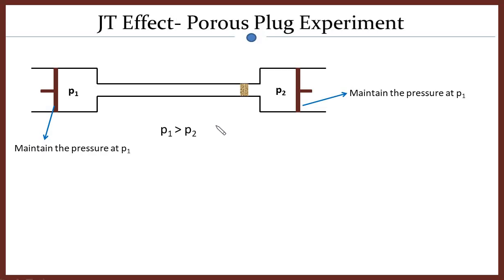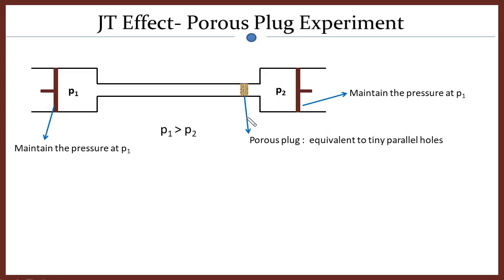P1 and P2 are chosen such that P1 is greater than P2. This means compartment 1 is a higher pressure region and compartment 2 is a lower pressure region, with P2 much less than P1. Due to this pressure difference, gas will expand from compartment 1 to compartment 2 through this porous plug. A porous plug is nothing but a bunch of tiny holes, so gas is allowed to pass through those tiny holes from compartment 1 to compartment 2.